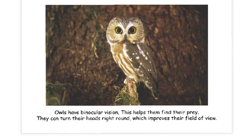This example shows an owl with forward-facing eyes and therefore binocular vision. This helps them to find their prey. Owls have overcome the problem of having a narrower field of vision by being able to turn their heads round and therefore improving their field of view.